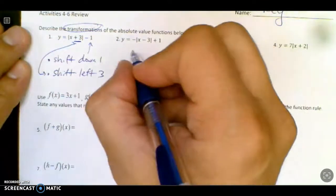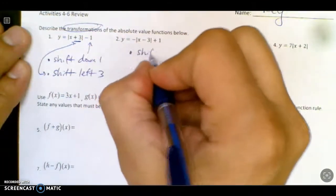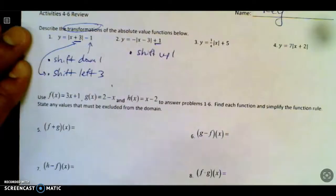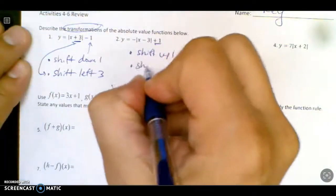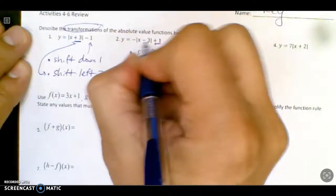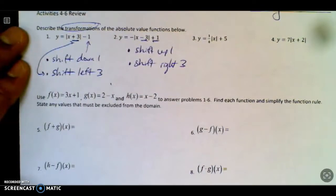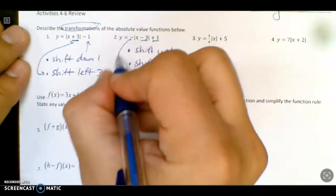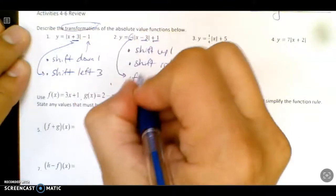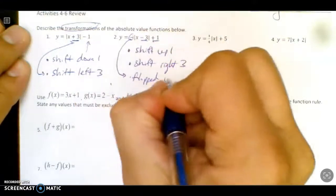Similarly here, we're going to have shift up 1, that's from that part. And then we're going to shift right 3 from this part, because it's lying to you again. And then what does this negative sign up front do? That flips it upside down.